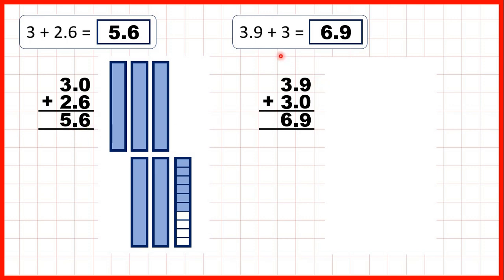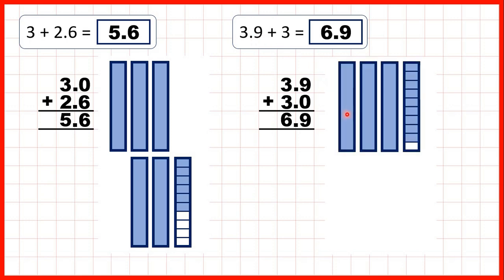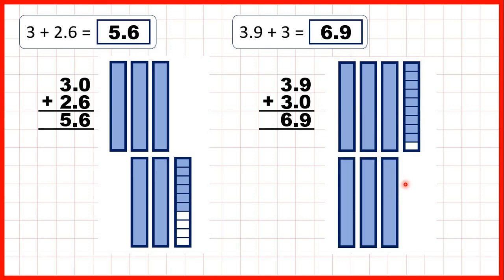For this question we started with 3.9, so that's three ones and nine tenths, and we were adding three, which is three ones. In our answer we still have our nine tenths, but altogether we've got six ones, so that gives us 6.9.